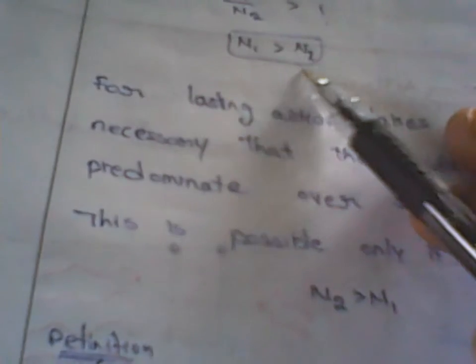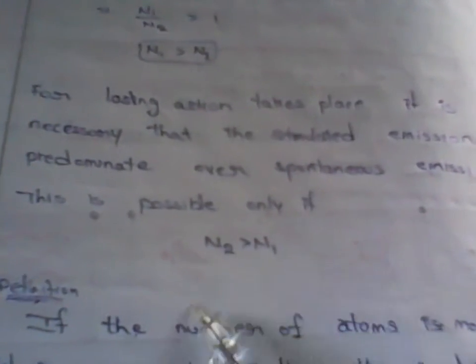But h×mu and kBT are all positive values, so e^(positive value) is greater than 1. Therefore N1/N2 > 1, which means N1 > N2. But for laser action to take place, it is necessary that stimulated emission predominates over spontaneous emission. This is possible only if N2 > N1.